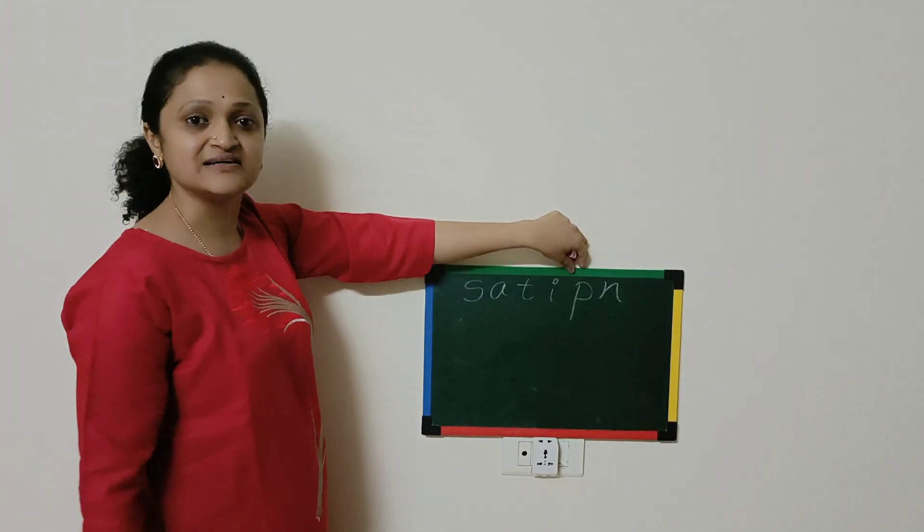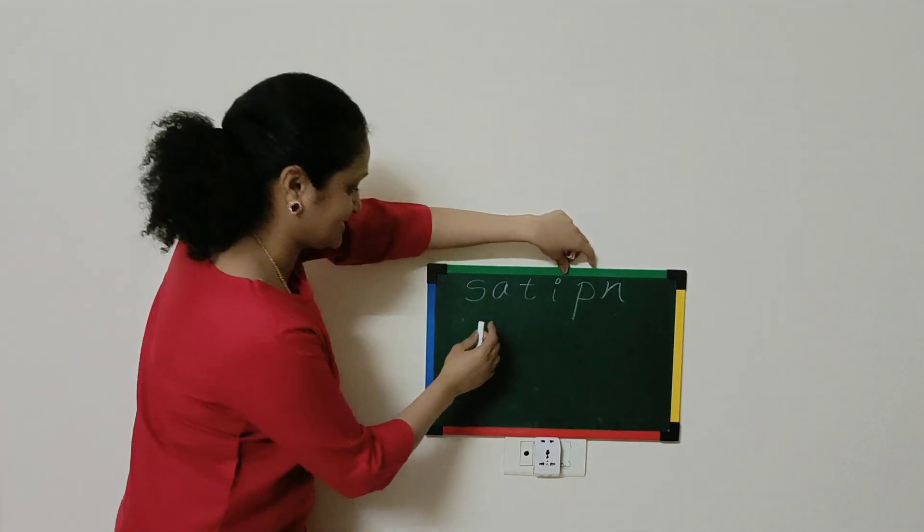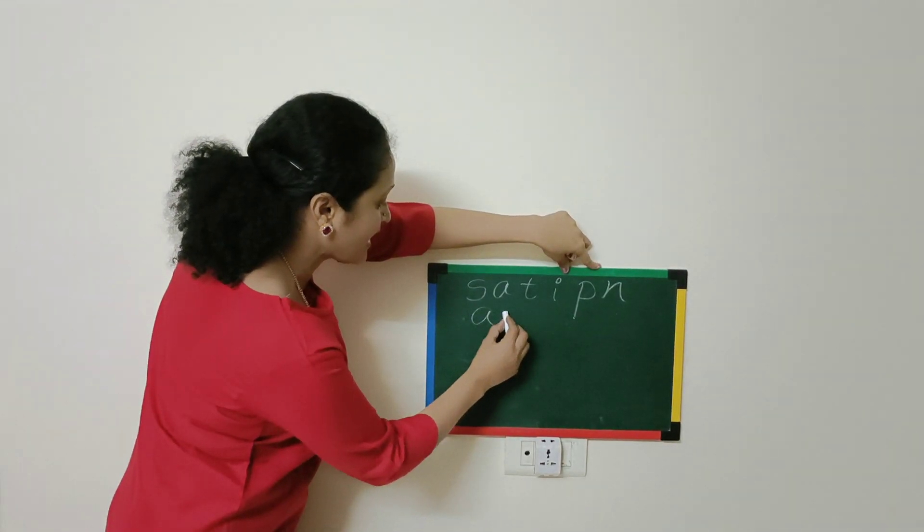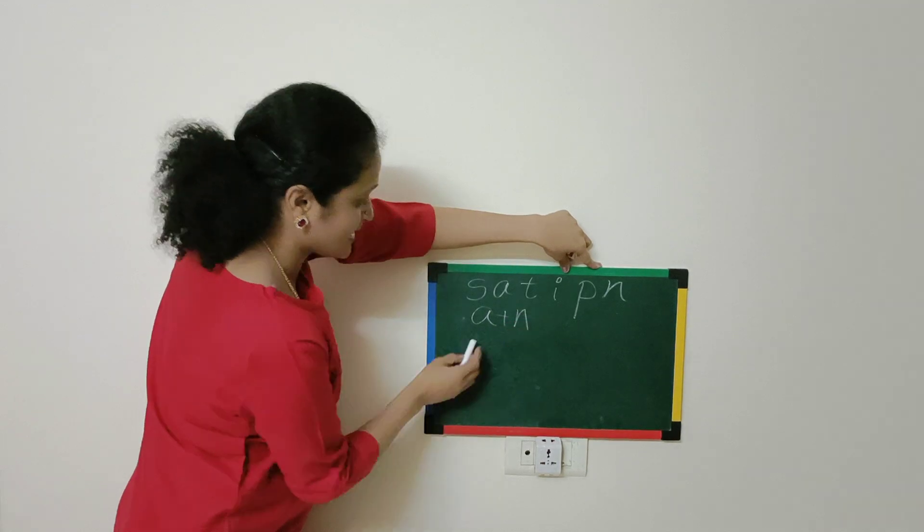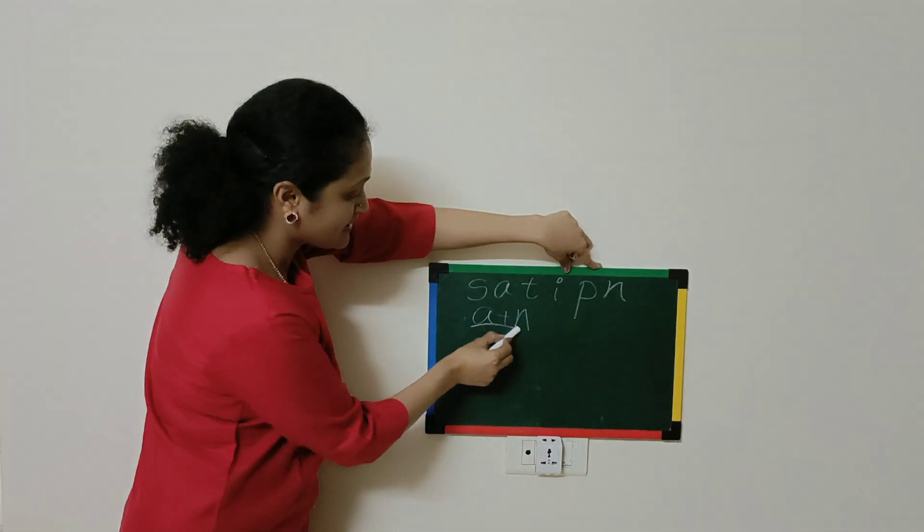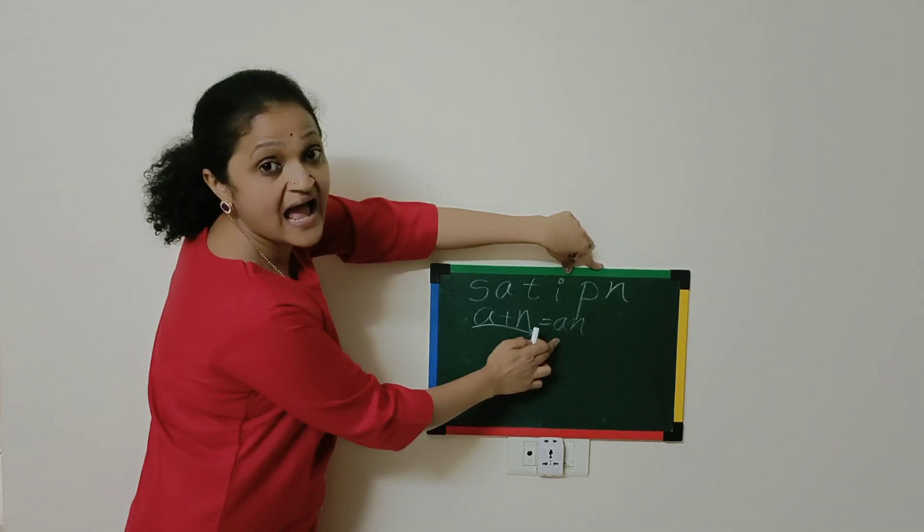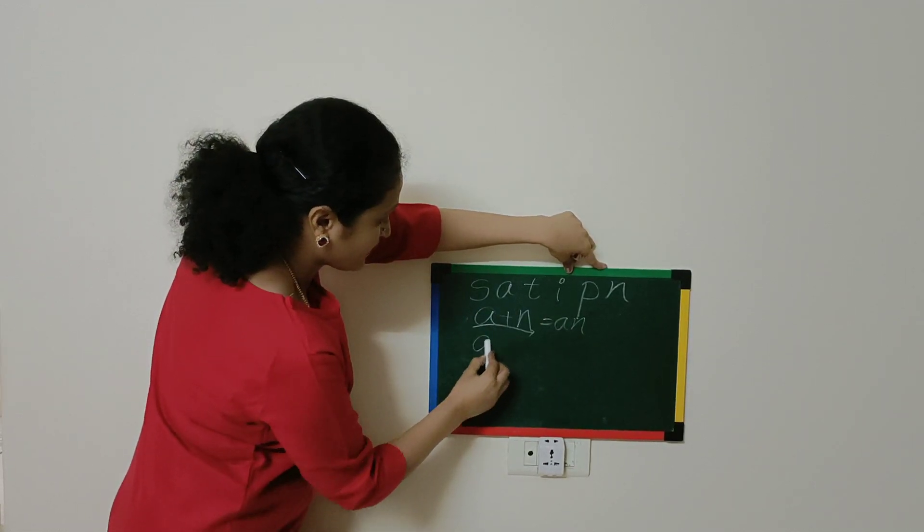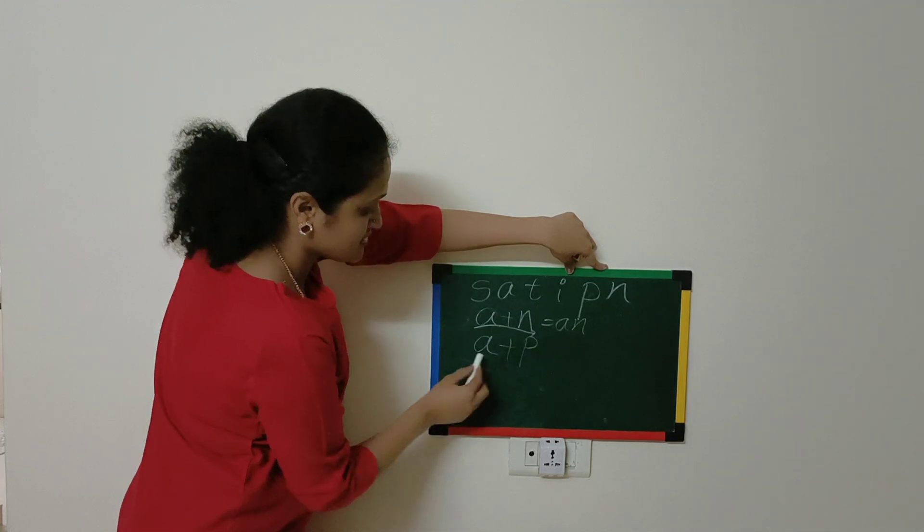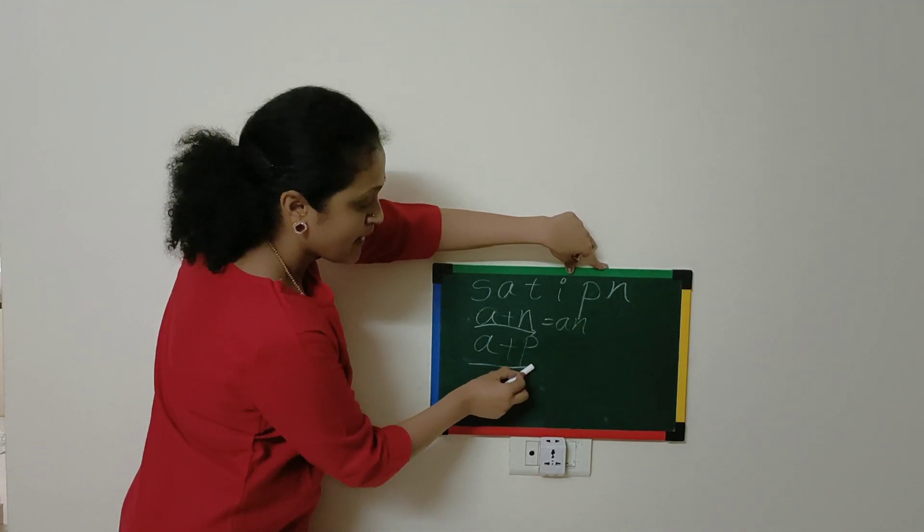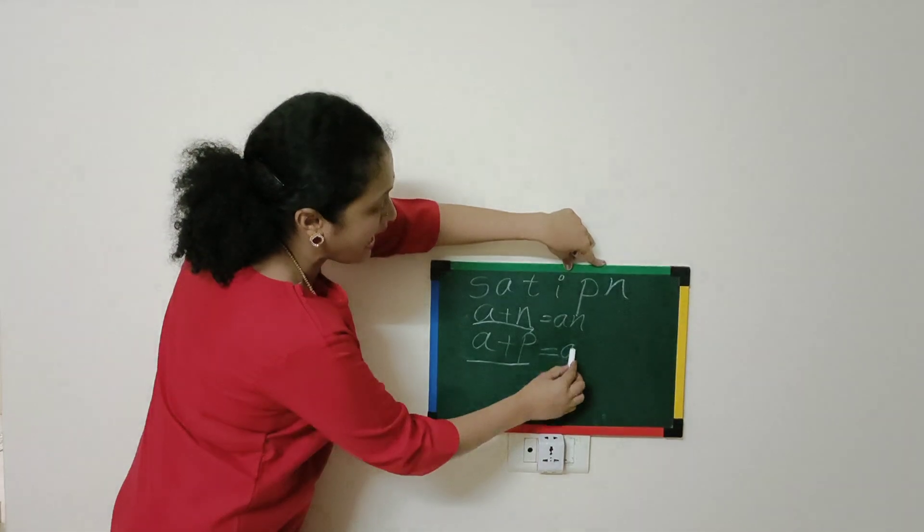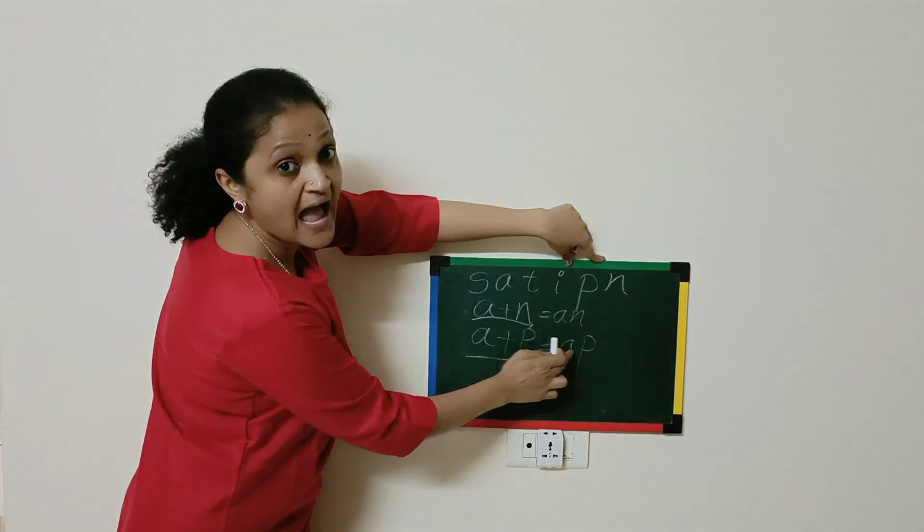We will learn how to blend two letters. A... T... A... T... AT. A... P... AP.